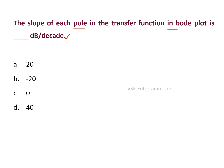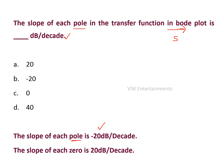Bode plot is one of the techniques in the frequency domain. By using this technique we can determine the stability of a system. If the transfer function has a pole, then the slope of each pole is minus 20 decibels per decade. If the transfer function has a zero, then the slope of that zero is plus 20 decibels per decade. So option B, minus 20 decibels per decade, is the right answer.